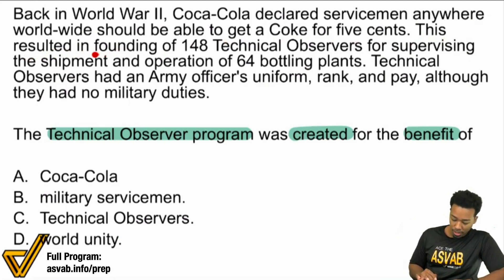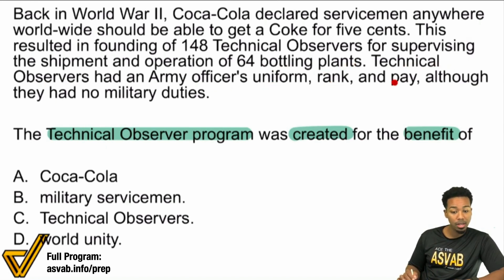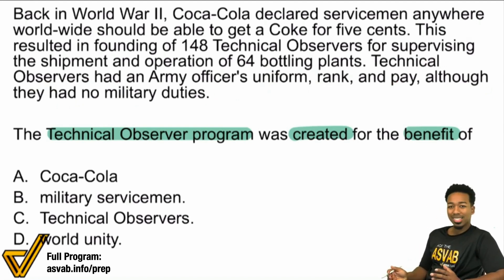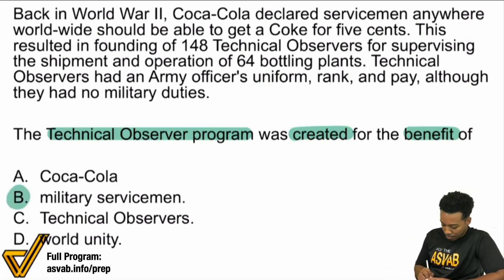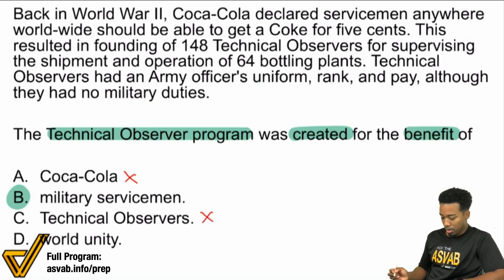This resulted in the founding of 148 Technical Observers for supervising the shipment and operation of 64 bottling plants. Technical Observers had an army officer's uniform, rank, and pay, although they had no military duties. So let's really break this down here because the answer is going to be B — military servicemen. But let's understand why it wasn't Coca-Cola, Technical Observers, or World Unity.